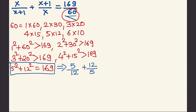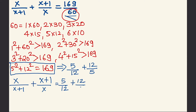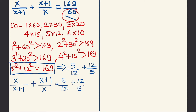Our equation becomes x/(x+1) + (x+1)/x = 5/12 + 12/5. Since this is a quadratic equation, it will have 2 roots. To find the 2 roots, we equate x/(x+1) = 5/12 for the first root, or x/(x+1) = 12/5 for the second root.